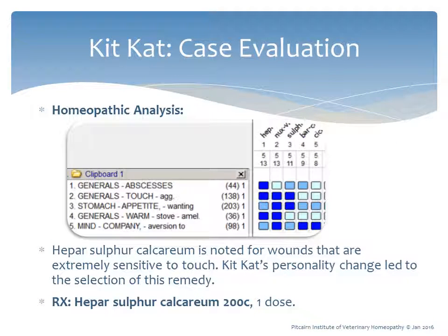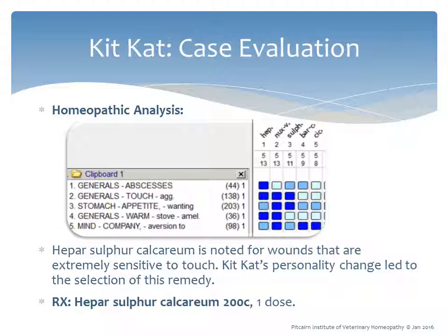The extreme grumpiness when touched was a major departure from this normally sweet cat's behavior — she was hissing and tried to bite when her temperature was taken. Kit Kat's case was evaluated using homeopathic computer software, with symptoms translated into rubrics. Hepar sulphuris calcareum was the best match, followed by nux vomica, sulphur, and baryta carb. Hepar sulphuris calcareum was selected because this remedy is noted for wounds extremely sensitive to touch, and Kit Kat's severe personality change was significant enough to guide the selection. A single dose of Hepar sulphuris calcareum 200C was administered.